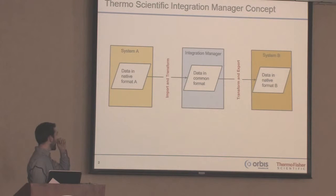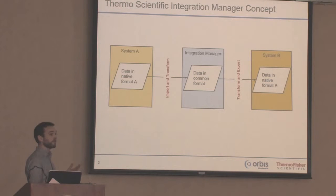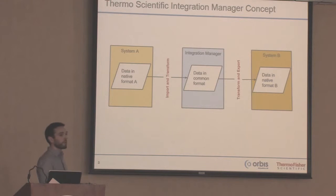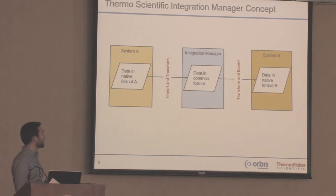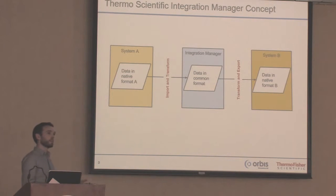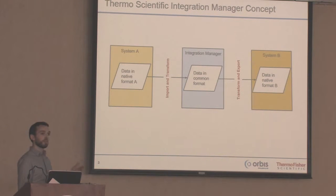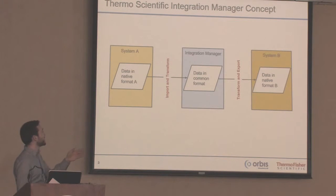System A typically has a proprietary data format — Format A — and System B will have its own data format. Integration Manager will take the data format from System A and transform it into a common system-neutral format, typically XML. Once in that format, we have a structured system-neutral format which can be transformed into the native format of any other system we want to receive. So we'll have an inbound transform and an outbound transform — that's the general concept of Integration Manager.